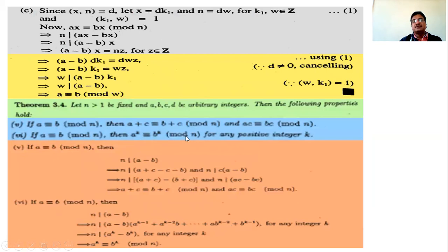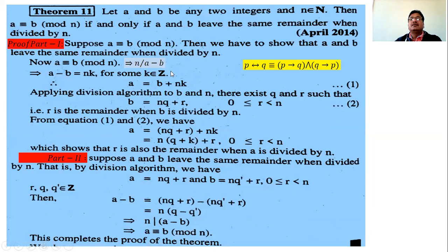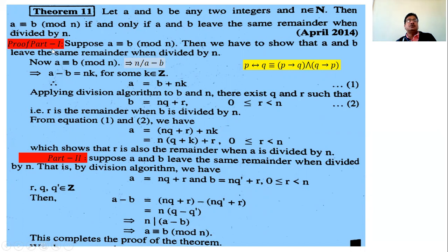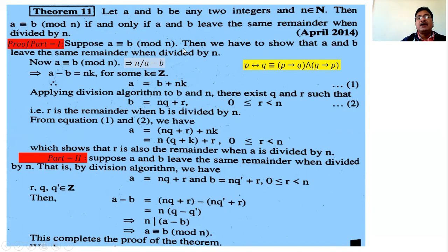The next important theorem: let a and b be two integers and n a natural number. Prove that a is congruent to b modulo n if and only if a and b leave the same remainder when divided by n. Since this is an if-and-only-if theorem, it is logically equivalent to proving both: p implies q and q implies p. Part one assumes p and proves q; part two assumes q and proves p.